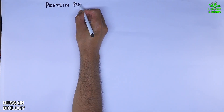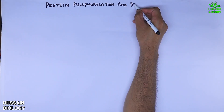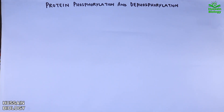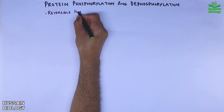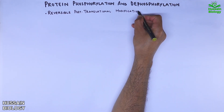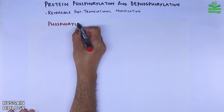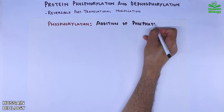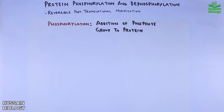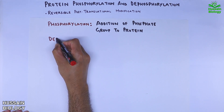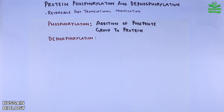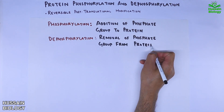In this video we will be discussing about protein phosphorylation and dephosphorylation. This event is the post-translational modification event. Phosphorylation is the addition of a phosphate group to a protein, and dephosphorylation is the removal of a phosphate group from a protein.